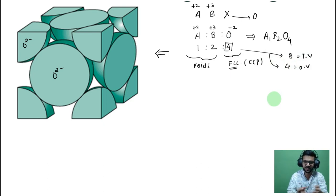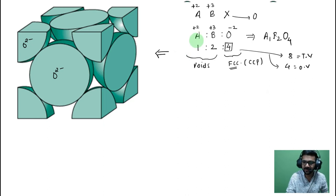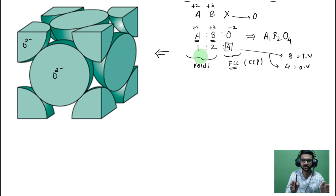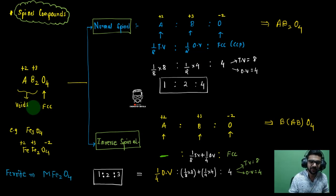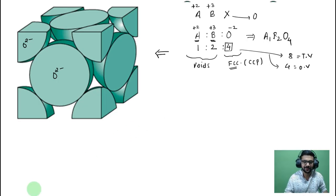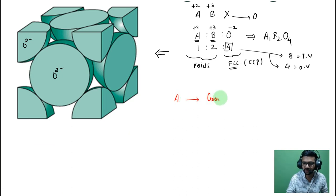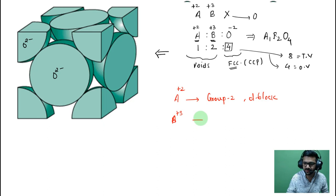If you don't know how to locate octahedral and tetrahedral voids in an FCC, you can visit my channel. Now the key question is: where will A be present and where will B be present? Depending on this, we have two different types of spinel compounds. Metal A is usually from Group 2 or the D-block with a +2 oxidation state, and B is usually a D-block metal with a +3 oxidation state.